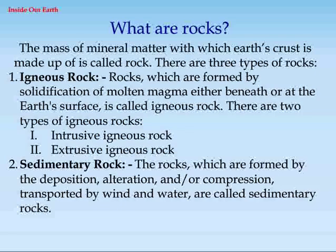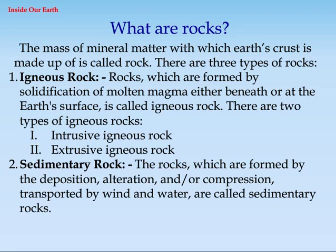What are rocks? The mass of mineral matter with which the earth's crust is made up of is called rock. There are three types of rocks. 1. Igneous rock: rocks which are formed by solidification of molten magma either beneath or at the earth's surface are called igneous rock.